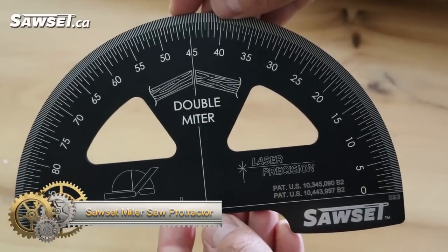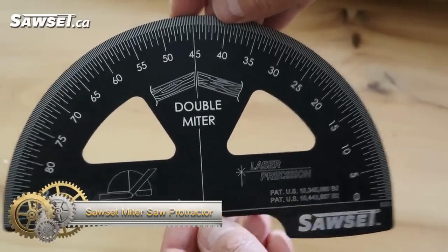The Saw Set Miter Saw Protractor is a precision tool developed for carpenters by carpenters.